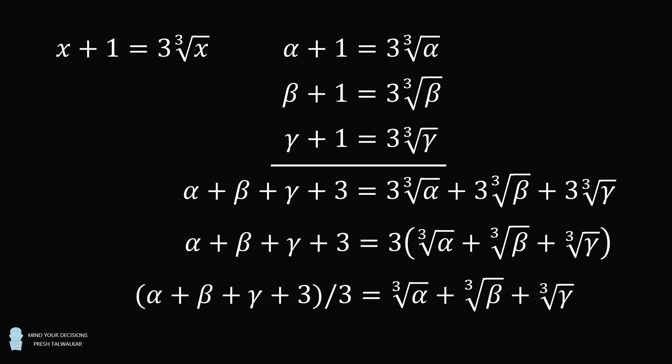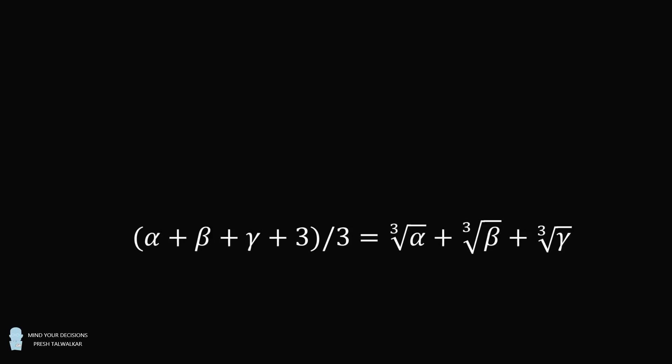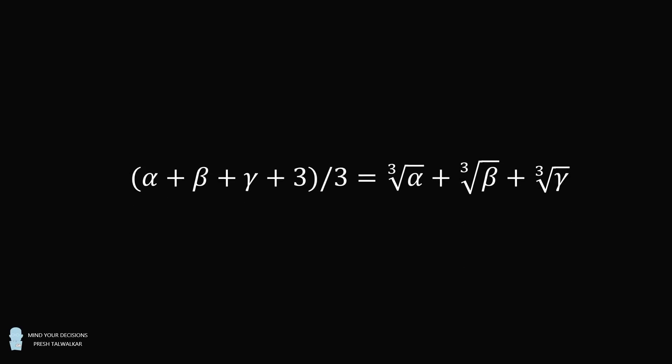So we're making good progress. We now just need to figure out the sum of alpha, beta, and gamma. But we can do that. From the original equation, we know that negative the coefficient on the second highest term divided by the coefficient on the highest term will be equal to the sum of the roots.